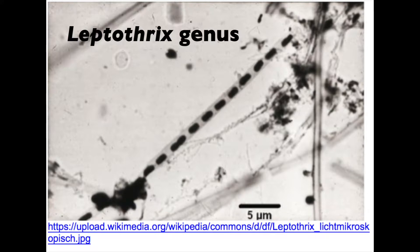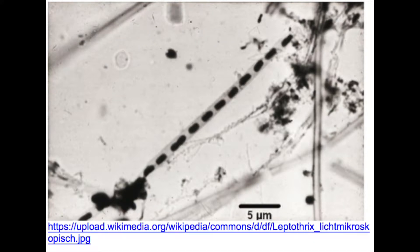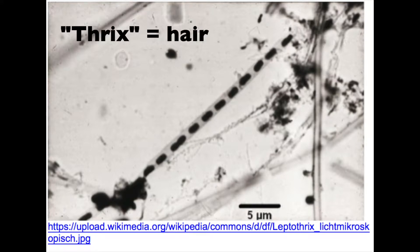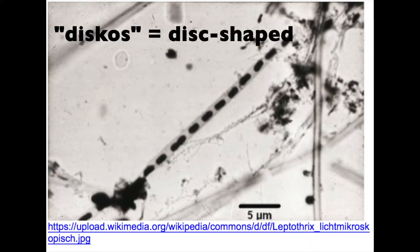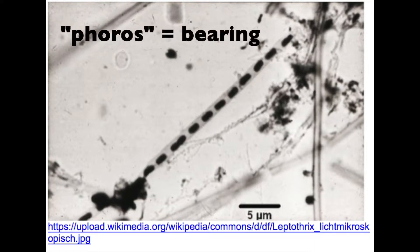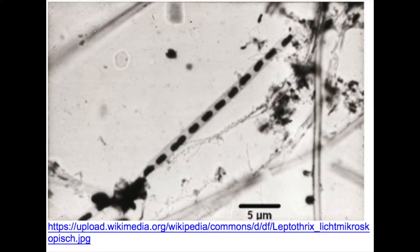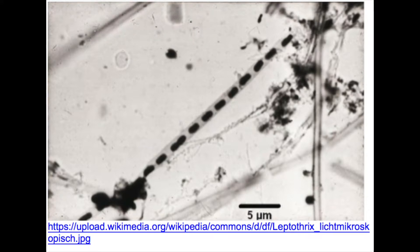Leptothrix, its genus, is a combination of two roots: leptos, meaning fine or small, and thrix, meaning hair. Thus, Leptothrix denotes fine hair. In a similar fashion, dyscophora, its species, is a combination of two roots: discos, meaning disc-shaped, and phoros, meaning bearing. Thus, dyscophora denotes disc-bearing. In breaking down L. dyscophora's name — fine hair and disc-bearing — its overall shape becomes evident.